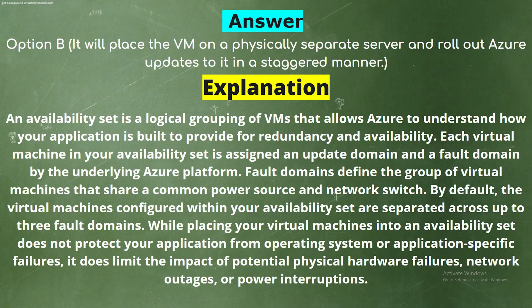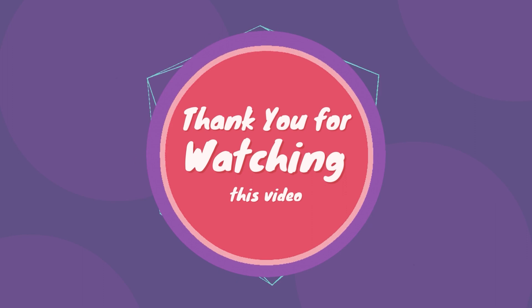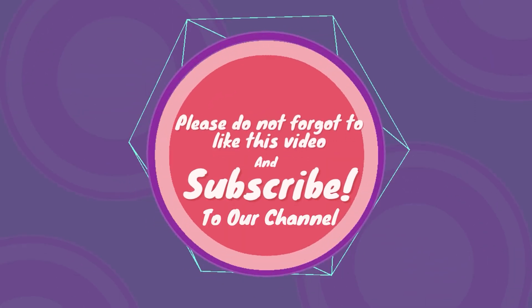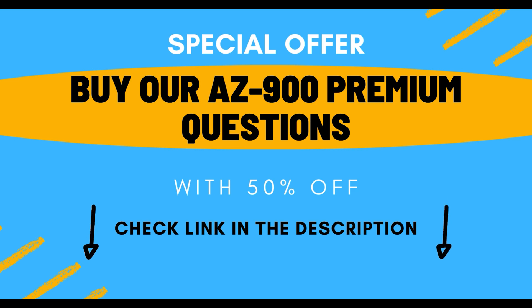Explanation: An availability set is a logical grouping of VMs that allows Azure to understand how your application is built to provide redundancy and availability. Each VM in your availability set is assigned an update domain and a fault domain by the underlying Azure platform. Fault domains define the group of VMs that share a common power source and network switch. By default, VMs in your availability set are separated across up to three fault domains, limiting the impact of potential physical hardware failures, network outages, or power interruptions. Thank you for watching — please like this video and subscribe to our channel.